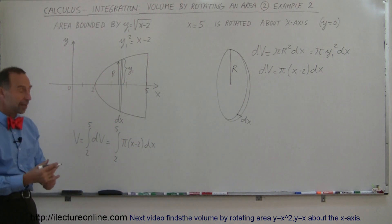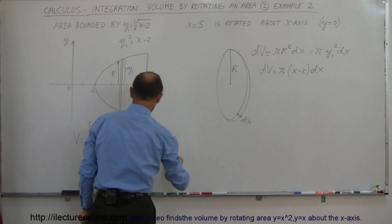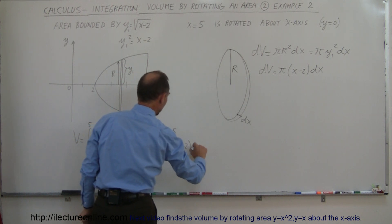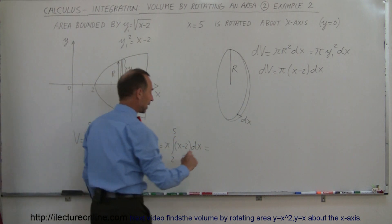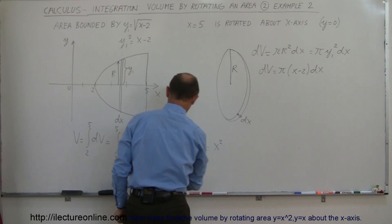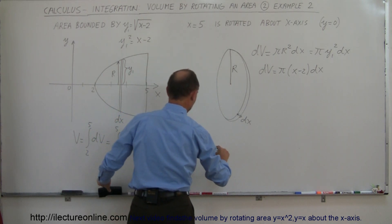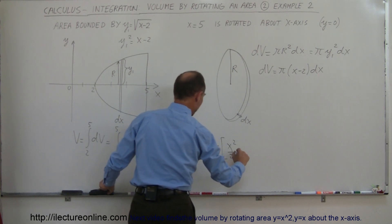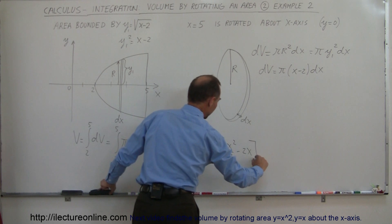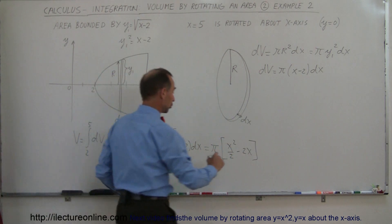dv is equal to π times (x minus 2) times dx. Since π is a constant, I can move that outside the integral sign, so this is equal to π times the integral from 2 to 5 of (x minus 2) dx. I'm ready to integrate—that's an easy integral.